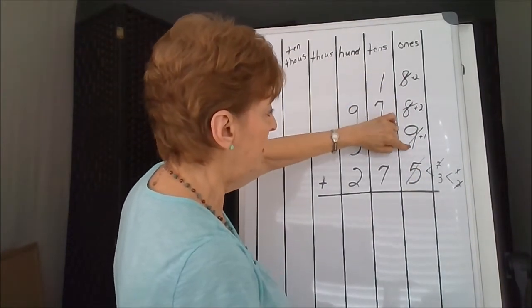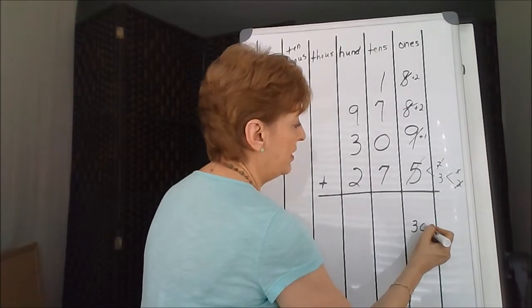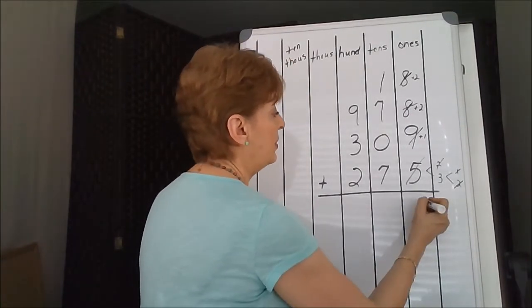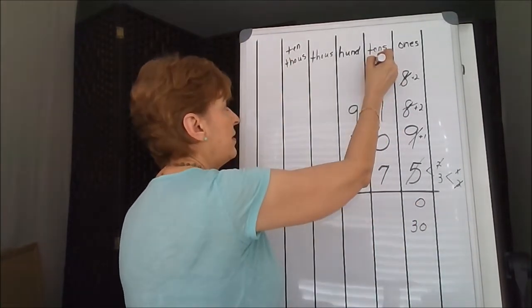So it's 10, 20, 30. 30 is way too big. I'm going to put down the 0 and carry the 3.